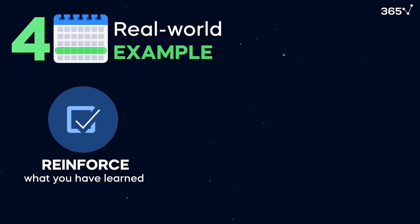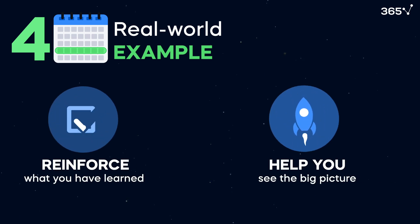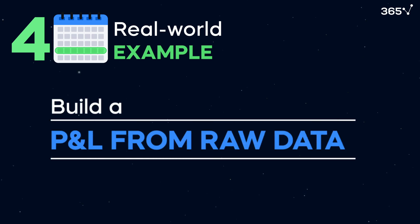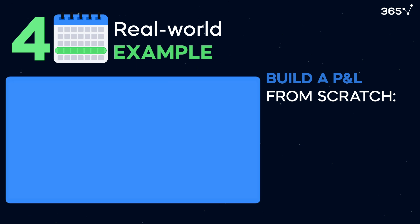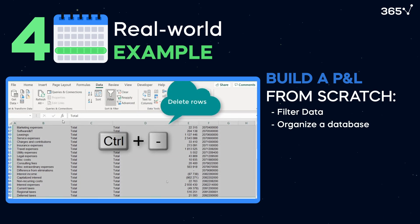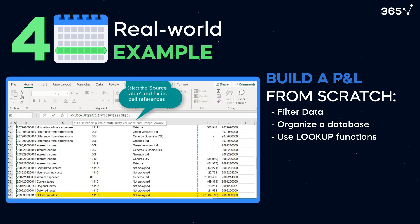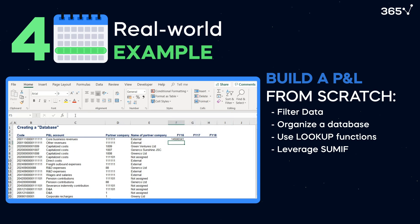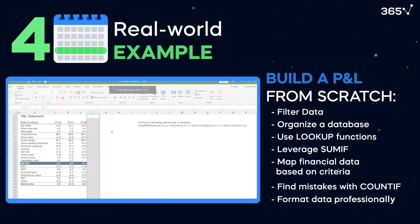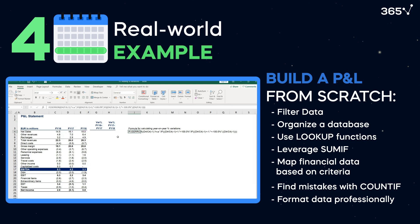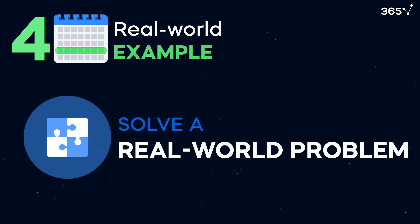This will reinforce significantly what you have learned and will help you see the big picture. From my experience, the best exercise for aspiring financial analysts is to build a P&L from raw data extraction — and this is precisely what I'd advise you to do in week 4. The build-a-P&L-from-scratch exercise asks students to filter data, organize a database, use lookup functions, leverage SUMIF, map financial data based on criteria, find mistakes with COUNTIF, and format data professionally. This shows you how to use your newly acquired knowledge to solve a real-world problem.